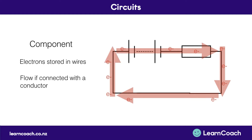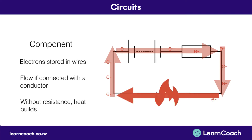There must also be a component in the circuit for it to be functional. The flow of electrons causes friction, which will cause the wire to heat up. And if the wire heats up too much, it may cause fire. So we need to have a component to create some sort of resistance within the circuit.